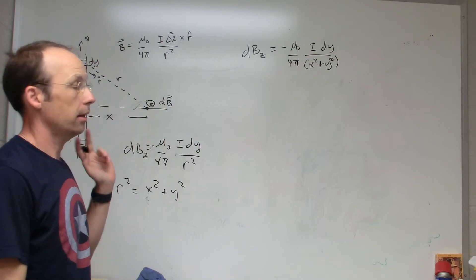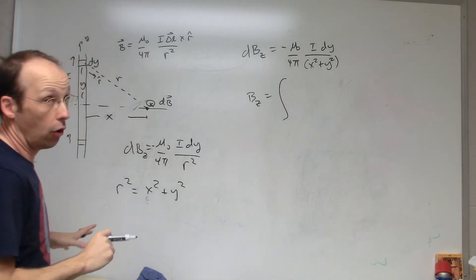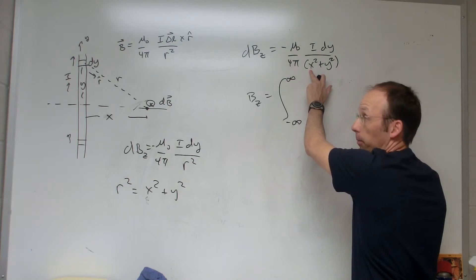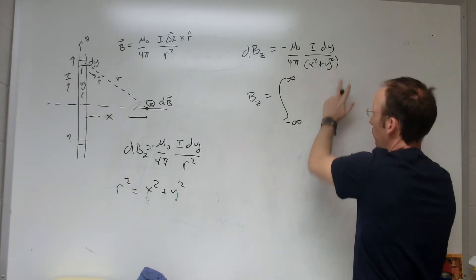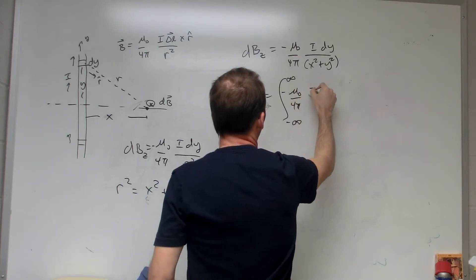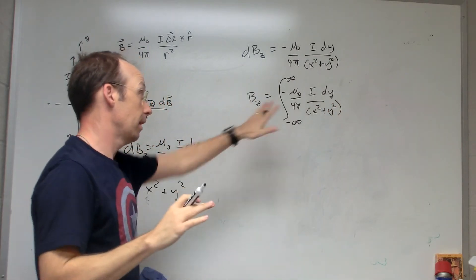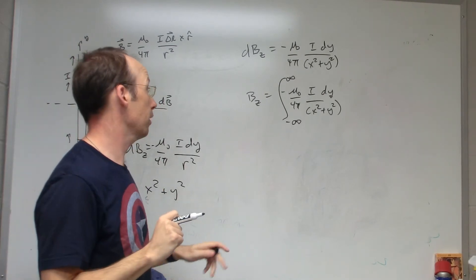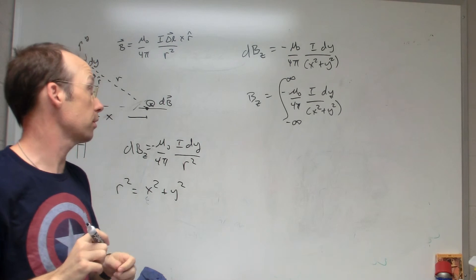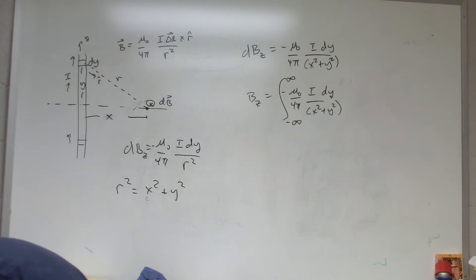Now I can integrate both sides and get the total magnetic field. For a long wire I integrate from negative infinity to infinity. X doesn't change in this problem — x is always the same — so I should get an answer in terms of x with no y. The integral is negative μ₀ over 4π times I, integrated dy over (x² + y²). This isn't trivial — with y² on the bottom and no dy on top, you can't do u-substitution. I suspect it's a trig substitution.